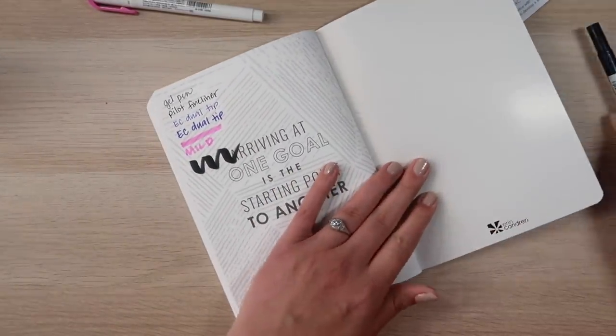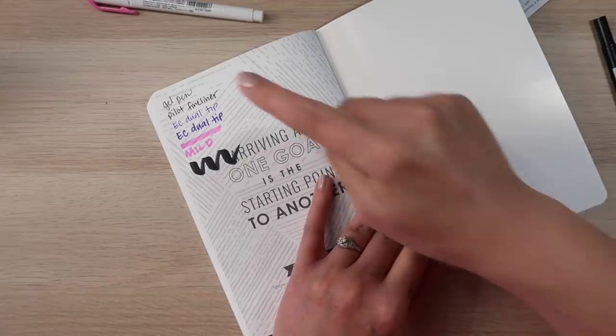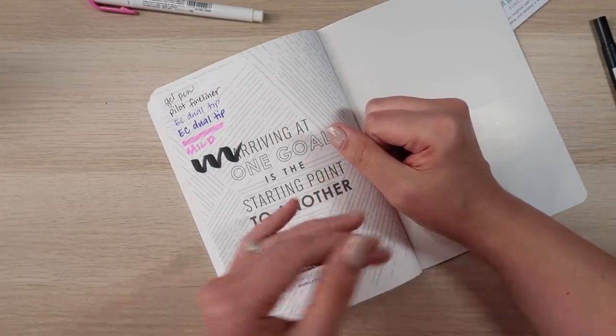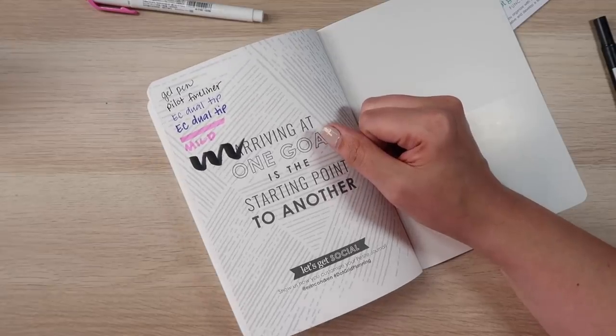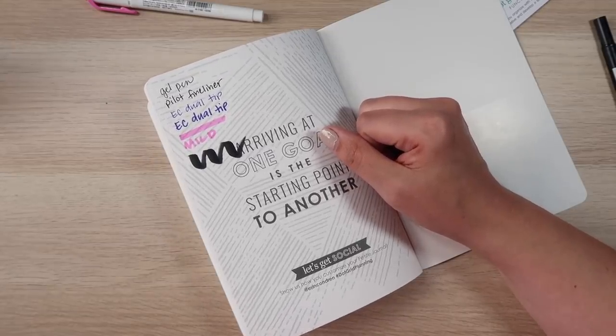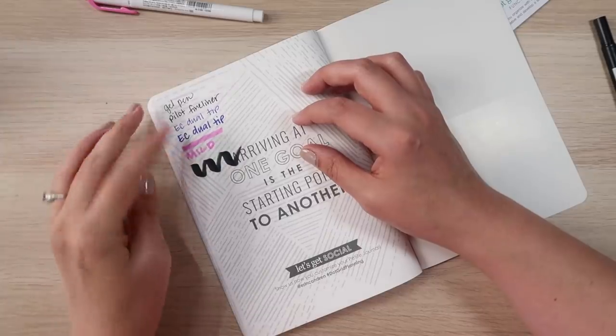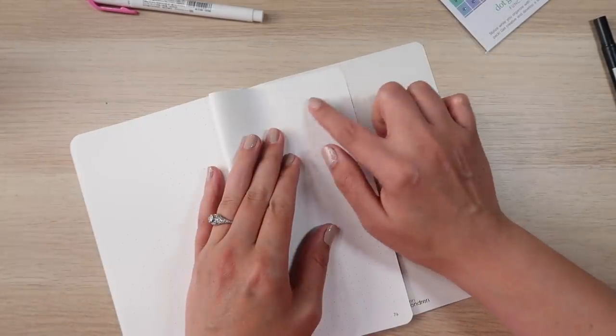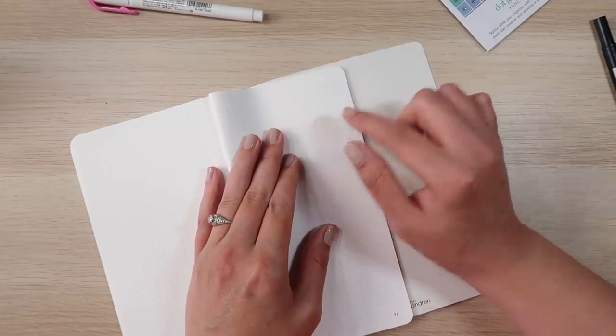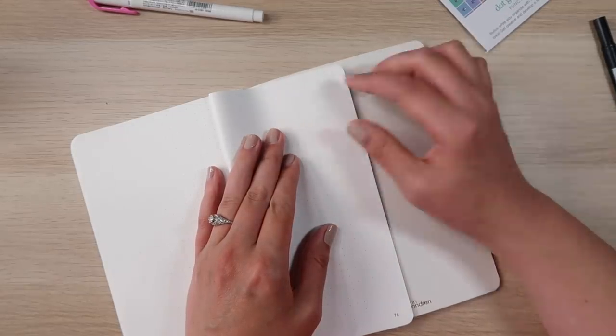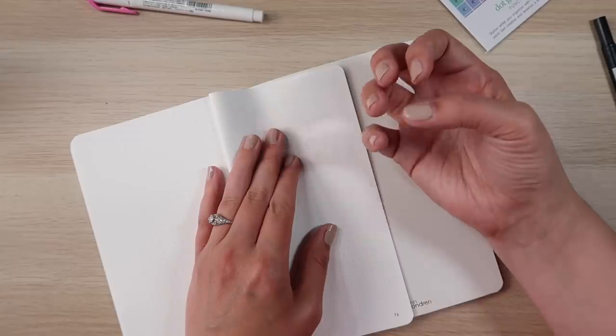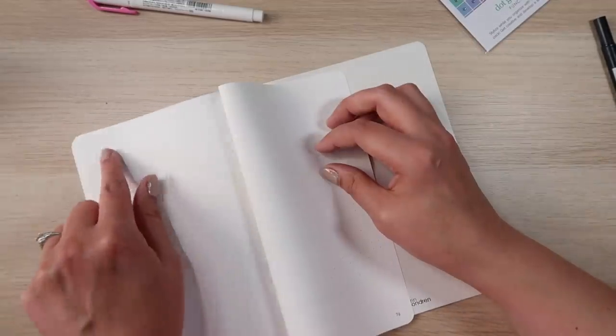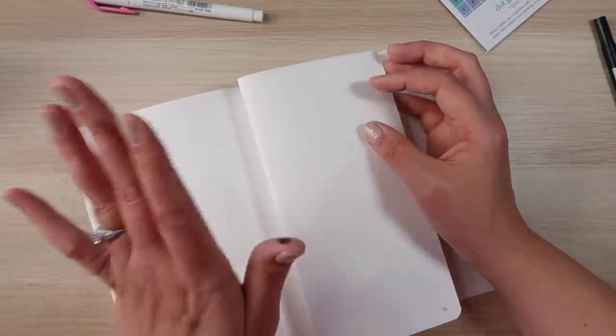All right. Now, before I flip this over to check the other side, one thing I am going to point out is that the pilot fineliner did not smear immediately on writing, which is the problem I have been having with my Archer and Olive. So that was nice. So I've got all of them here and we're going to take a look and see kind of what they look like. It feels like the gel pen, the pilot and the EC, a smaller point all left that ridged surface that happens sometimes with a heavy hand. There's a little bit of the imprint on this page as well. I have a heavy hand, so take that as you will.